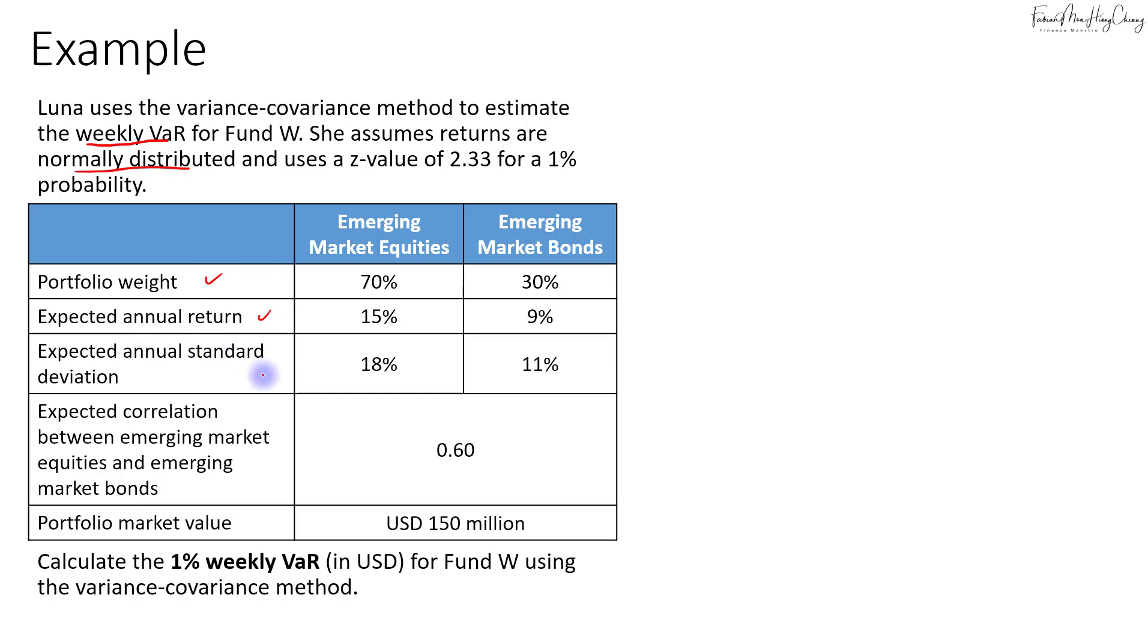We are given the weightage, the expected annual return, the expected annual standard deviation, the correlation between the two asset classes, and the portfolio market value. We are required to calculate the 1% weekly VaR for Fund W using the variance-covariance method. Before we start, note that the return and standard deviation are given in annual terms, but the VaR is required to be computed in weekly time intervals. So we'll have to do a bit of scaling later on.